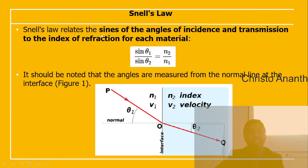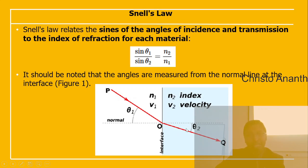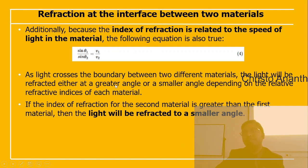Snell's law is formally defined as the ratio of the sine of the angle of incidence to the sine of the angle of transmission, equal to the ratio of the refractive indices: sin θ₁ / sin θ₂ = n₂ / n₁. Angles are measured from the normal at the interface. Because the refractive index relates to the speed of light, this also equals v₁ / v₂.